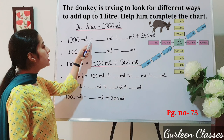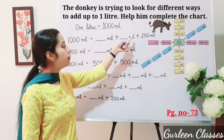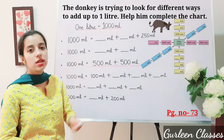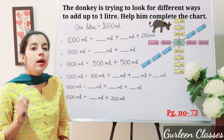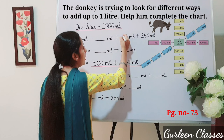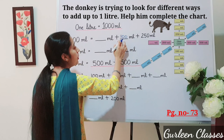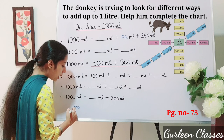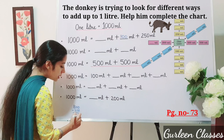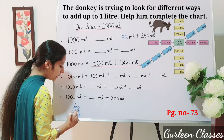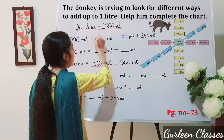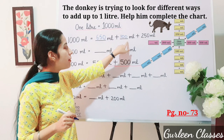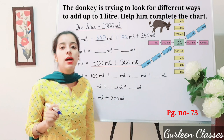One thousand milliliter equals dash milliliter plus dash milliliter plus 250 milliliter. What numbers will make one thousand milliliter? We can write one hundred here. So 250 plus 100 is 350. Then one thousand minus 350: we get 650. So we write 650. Check: 650 plus 100 is 750, and 750 plus 250 is 1000. Answer is correct.